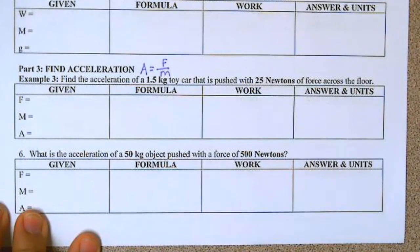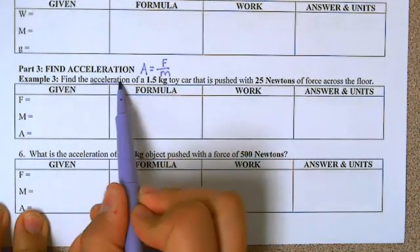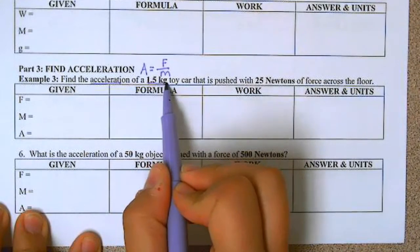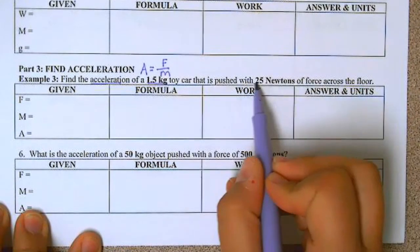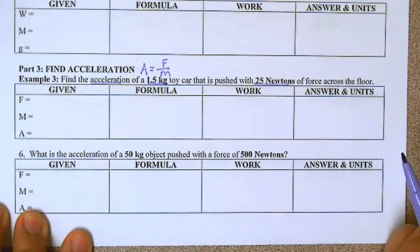So let's read example number three. It says, find the acceleration of a 1.5 kilogram toy car that is pushed with 25 newtons of force across the floor.